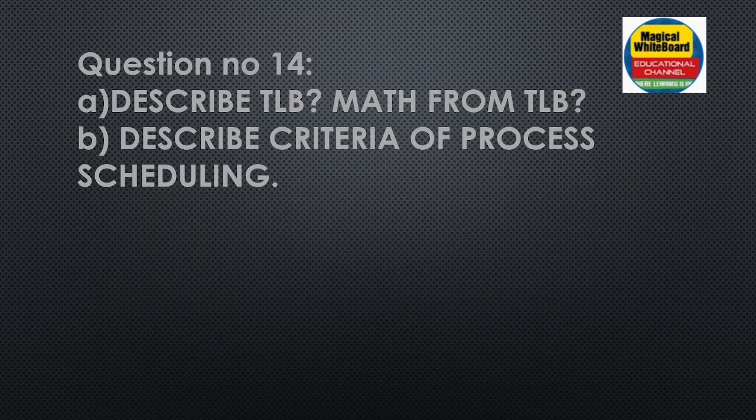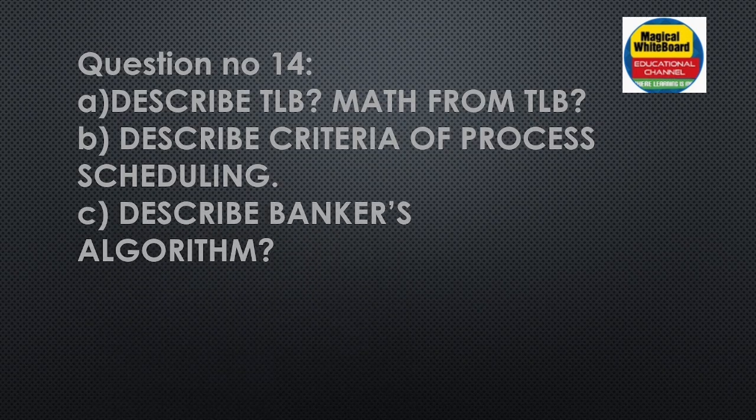Important questions: what are the criteria of process scheduling? Criteria include response time, throughput, waiting time, turnaround time, and CPU utilization — definitions required in format. Next, Banker's Algorithm mathematical problem — theory, Step 1, allocation safety algorithm, and resource request algorithm.